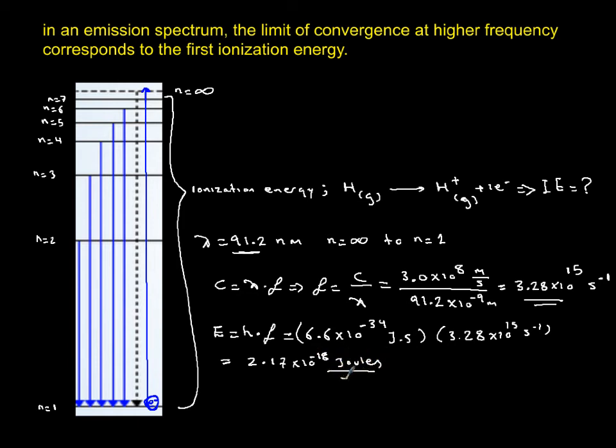Now this is per electron. You should realize we'd like it in joules per mole or kilojoules per mole. What we're going to do is remember that one mole of anything, specifically one mole of electrons, is 6.02 × 10^23 electrons.